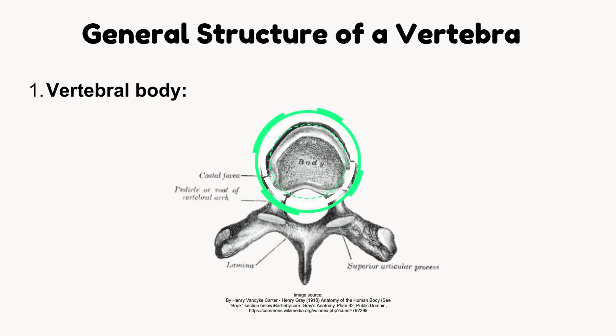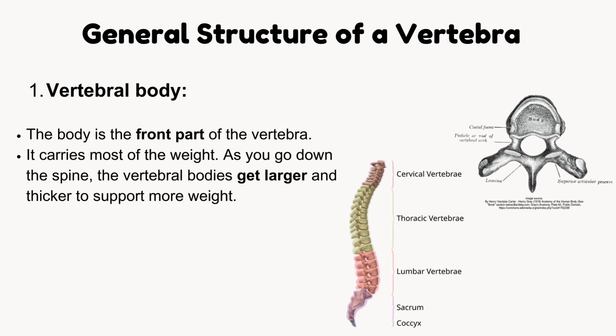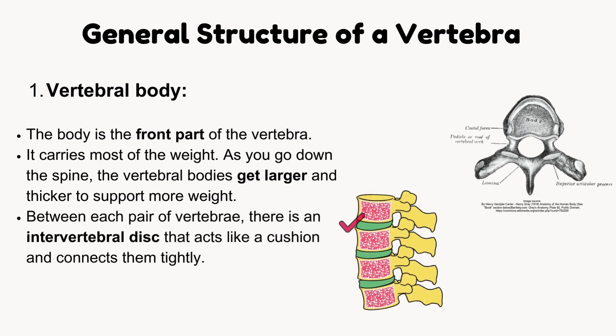Vertebral body. The body is the front part of the vertebra and it carries most of the weight. As you go down the spine, the vertebral bodies get larger and thicker to support more weight. Between each pair of vertebrae, there is an intervertebral disc that acts like a cushion and connects them tightly.